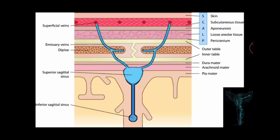The scalp refers to the layers of skin and subcutaneous tissue that cover the bones of the cranial vault. There are five layers of the scalp. The mnemonic 'SCALP' helps us remember them: S for skin, C for subcutaneous tissue or dense connective tissue, A for epicranial aponeurosis, L for loose areolar tissue, and P for periosteum or pericranium.